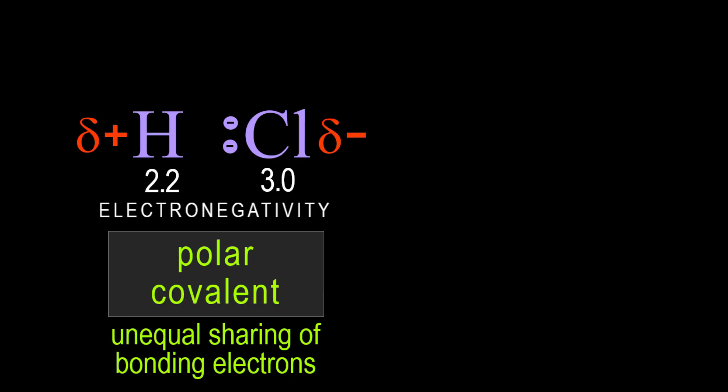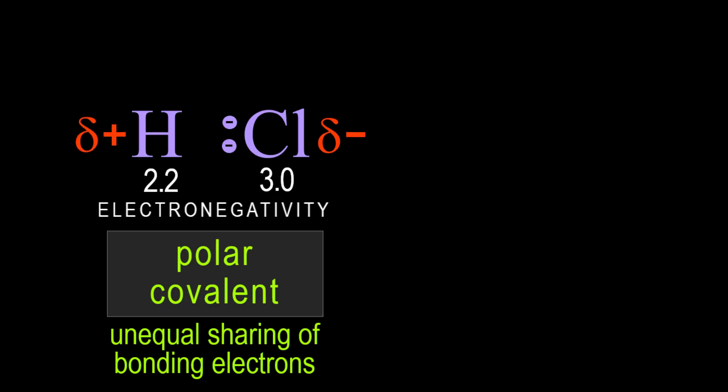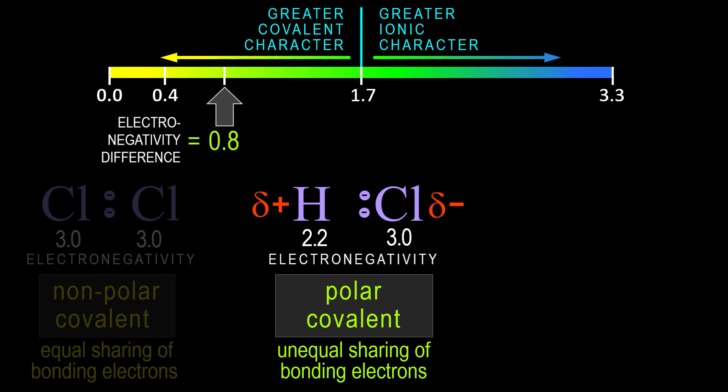And this is a result of the unequal sharing of bonding electrons, which spend more time at the chlorine, making it more negative, and the hydrogen more positive. And all of this is also shown by the electronegativity difference of 0.8, which is 3 minus 2.2, indicating a polar bond.